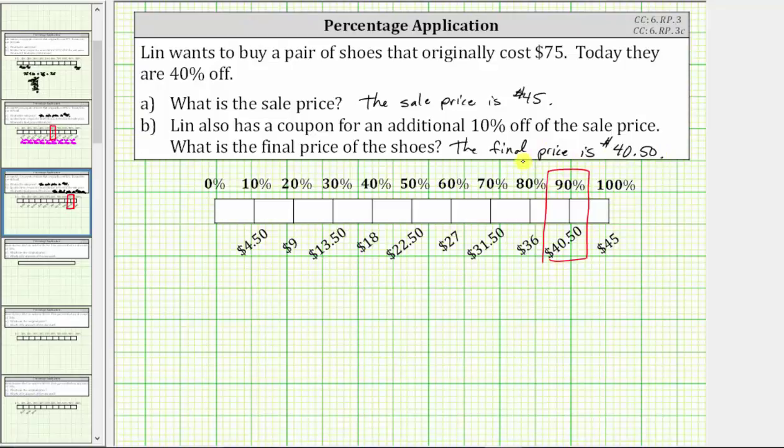Of course, another way to find the final sale price would be to find 10% of $45, which we know is $4.50, and then take the sale price of $45 and subtract $4.50.